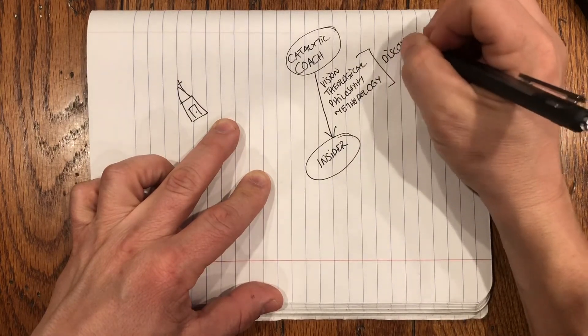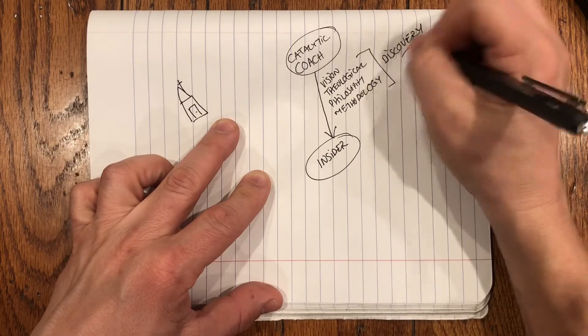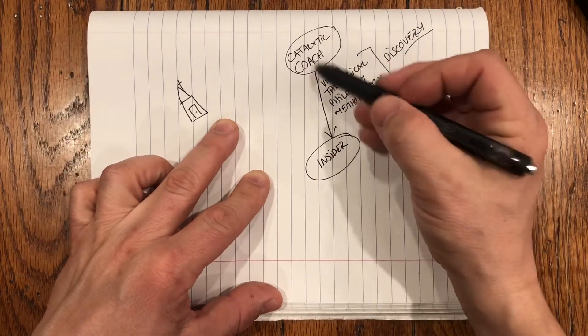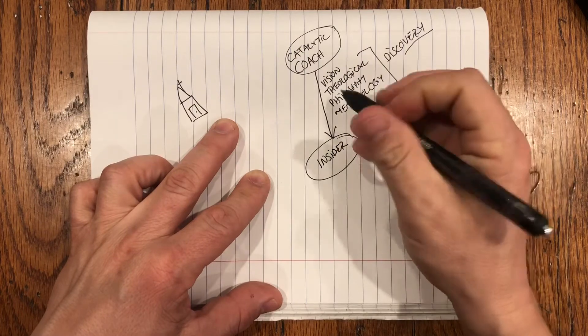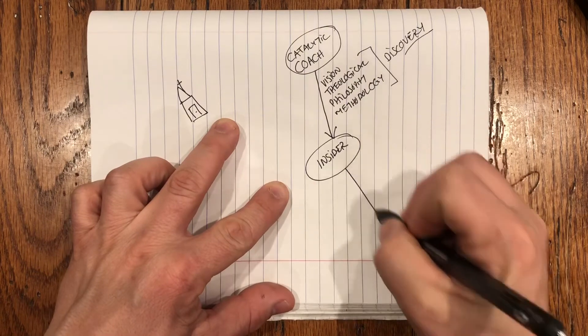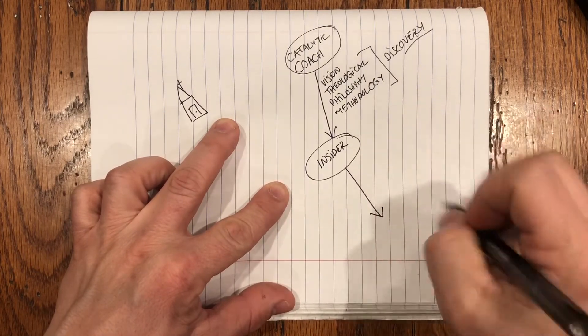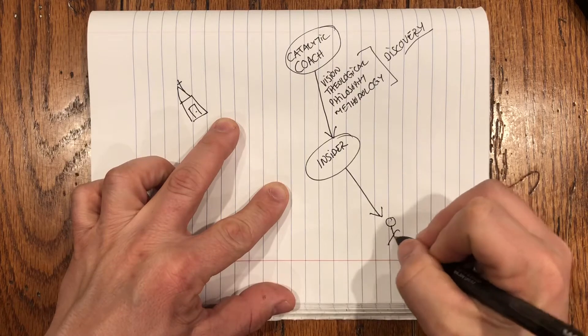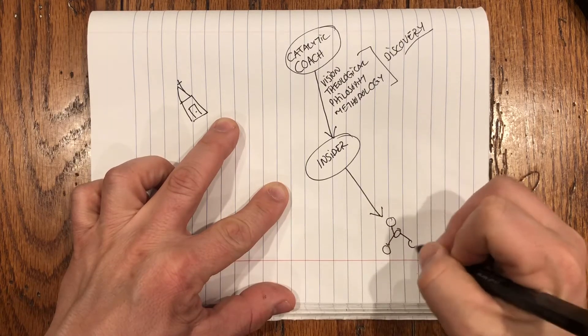And all of this, ideally, is happening through a process of discovery. Because when you discover something yourself, you have like an 85% buy-in instead of a 15% buy-in. And so this catalytic coach doesn't necessarily live in the country or live in the area. They're providing this for the insider. And then the insider is going and they're trying to catalyze within their own area, making disciples who make disciples and that sort of thing.